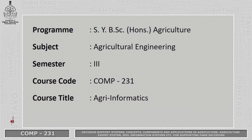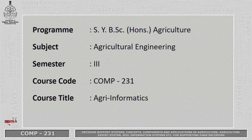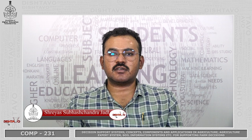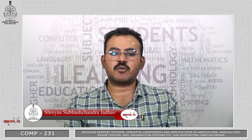Hello, dear students. Today we are going to learn the subject Agricultural Engineering for the second year B.Sc. Agricultural Program. The title of the course is Agriinformatics and the course code is Computer 231 for the third semester. The name of the module is Decision Support Systems, Concepts, Components and Applications in Agriculture along with Agricultural Expert System, Soil Information System, etc. for supporting farm decisions. I am Dr. Sears Subhashananda Jada, Working Assistant Professor in Non-Muscle College of Agriculture, Sulukorna, Goa.